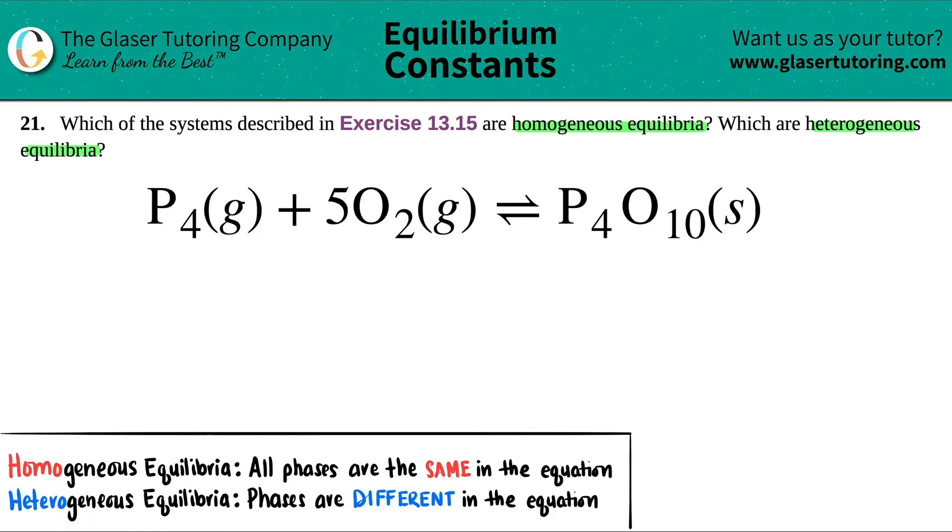Homogeneous equilibrium is when all the phases are the same in the balanced equation. Heterogeneous is when you have different phases in your equation.